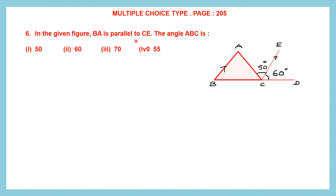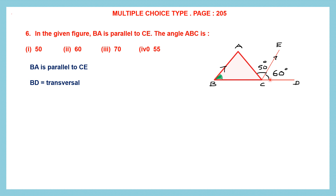In the given figure, BA is parallel to CE. So let's write that BA is parallel to CE. And the angle ABC is what we need to find out — that angle ABC shown in green. Now, this is a transversal and these two are the parallel lines. So BD is the transversal.